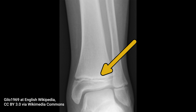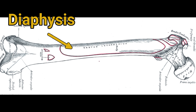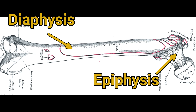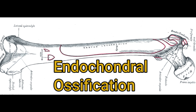The growth plate is a cartilaginous structure located at the ends of long bones in growing animals. Long bones, such as those in the limbs, can be divided into two anatomic areas: the diaphysis in the middle and the two epiphyses at each end. The growth plate is located between the diaphysis and the epiphysis, where new bone is produced to lengthen the bone as the animal grows. This way of forming bone is called endochondral ossification.